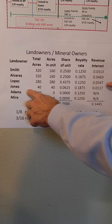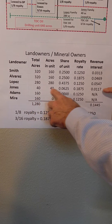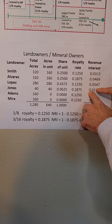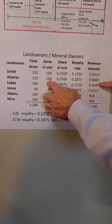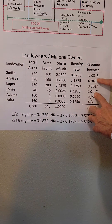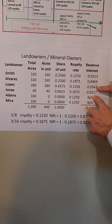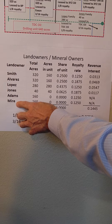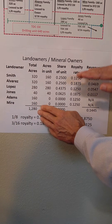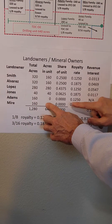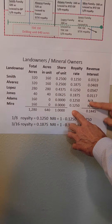The Lopez, Jones, and Adams families have a similar calculation and these are their respective shares. The Adams and Mir families are to the north and outside the well unit, so they get zero.